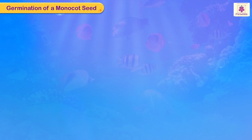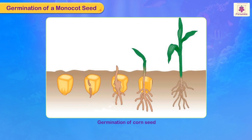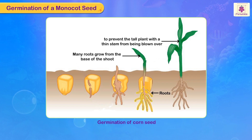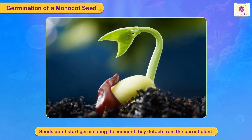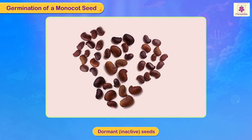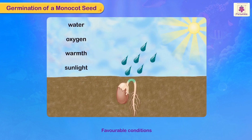Germination of a monocot seed — germination of corn seed: here, many roots grow from the base of the shoot to prevent the tall plant with a thin stem from being blown over. There is only one seed leaf in these plants. Seeds don't start germinating the moment they detach from the parent plant. Sometimes they remain dormant, that is inactive, for months or even years. They start germinating only when conditions are favorable for the seed to grow.